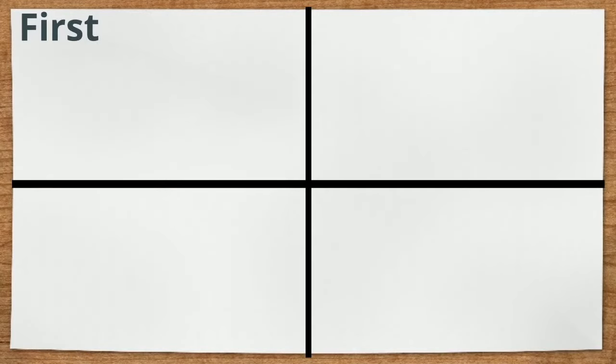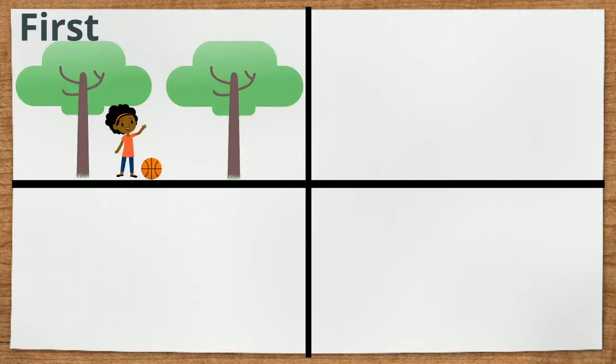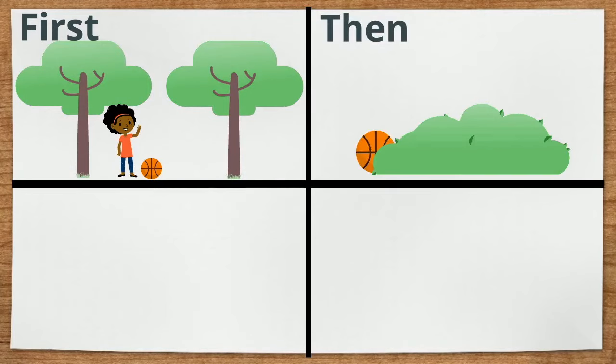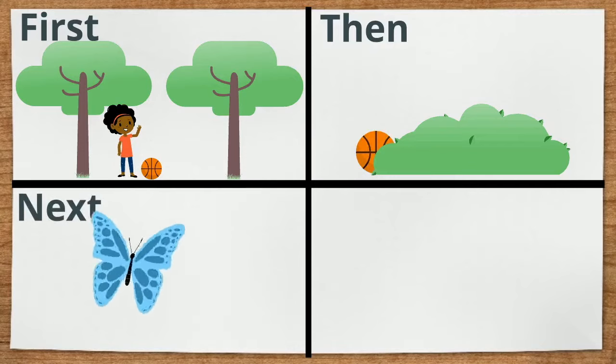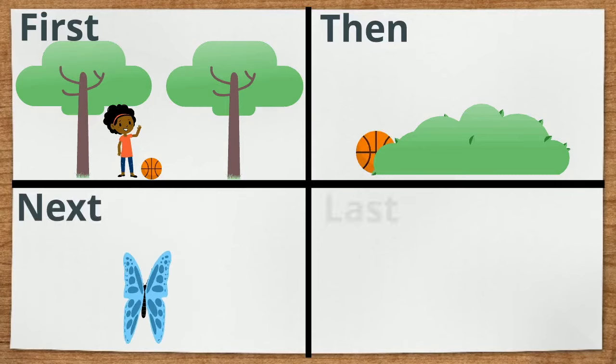The first thing that happened was, I went to the park to play basketball with my friends. Then, my basketball rolled into the bushes. Next, a beautiful blue butterfly flew out of the bushes. Last, the butterfly flew away and I went back to playing basketball with my friends.